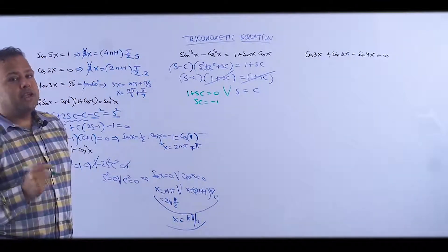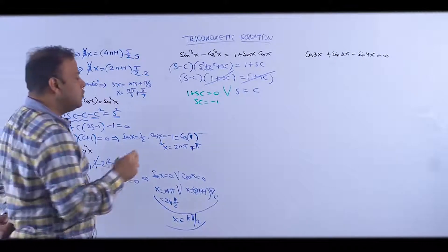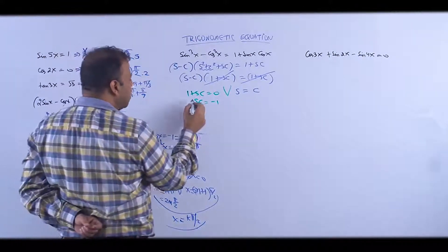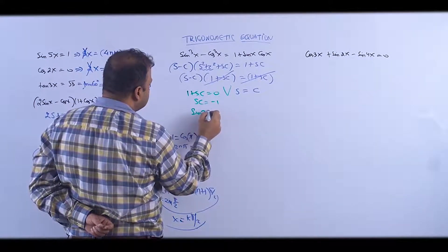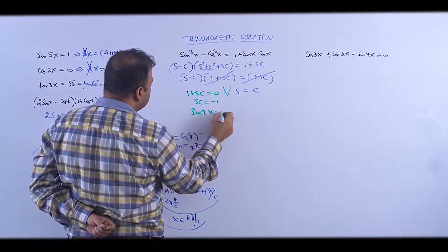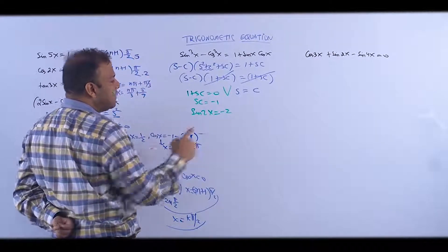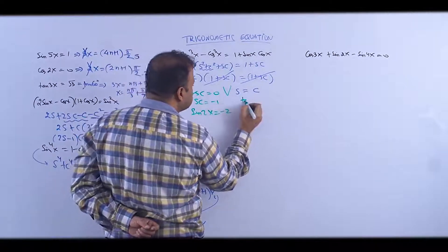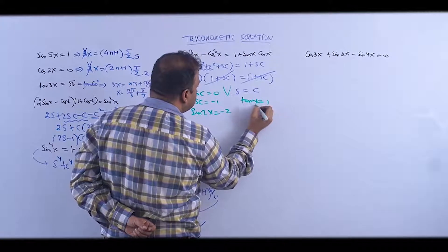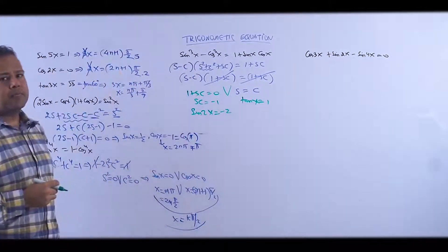sin(x)cos(x) = -1 means (1/2)sin(2x) = -1, so sin(2x) = -2. And sin(x) = cos(x) means tan(x) = 1, giving x = nπ + π/4 (after dividing).